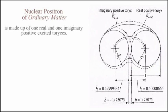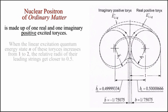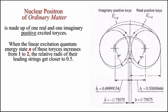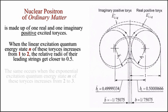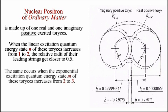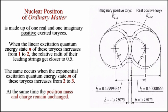The nuclear positron of ordinary matter is made up of one real and one imaginary positive excited torese. When the linear excitation quantum energy state n increases from 1 to 2, the relative radii of their leading strings get closer to 0.5. The same occurs when the exponential excitation quantum energy state m increases from 2 to 3. At the same time, the positron mass and charge remain unchanged.